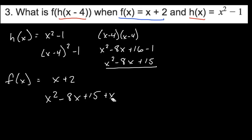Because we substituted x squared minus 8x plus 15 for x. And when we do that, we are left with x squared minus 8x plus 17, 15 plus 2.